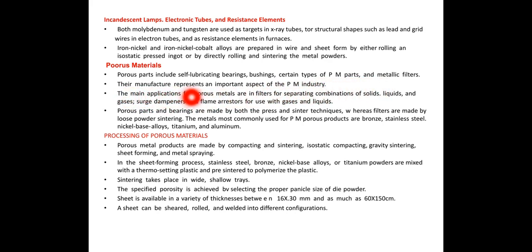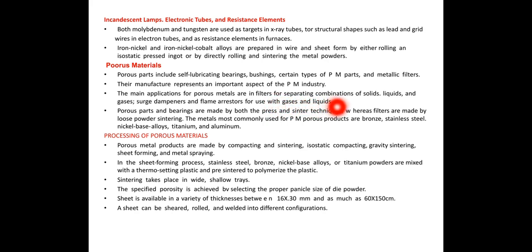Their manufacture represents an important aspect of the powder metallurgy industry. The main applications for porous metals are in filters for separating combinations of solids, liquids, and gases. Porous parts and bearings are made by both the press and sinter techniques.